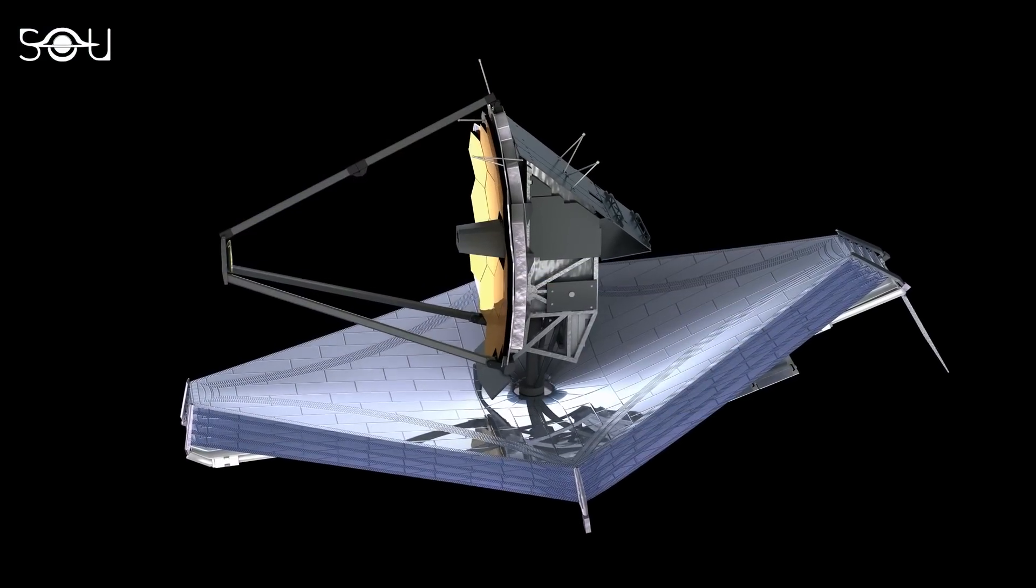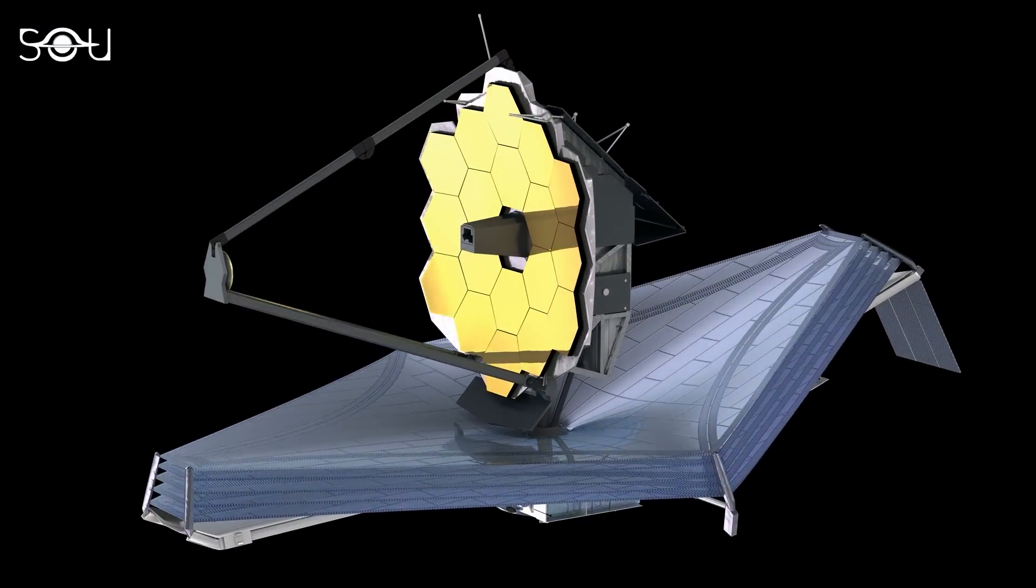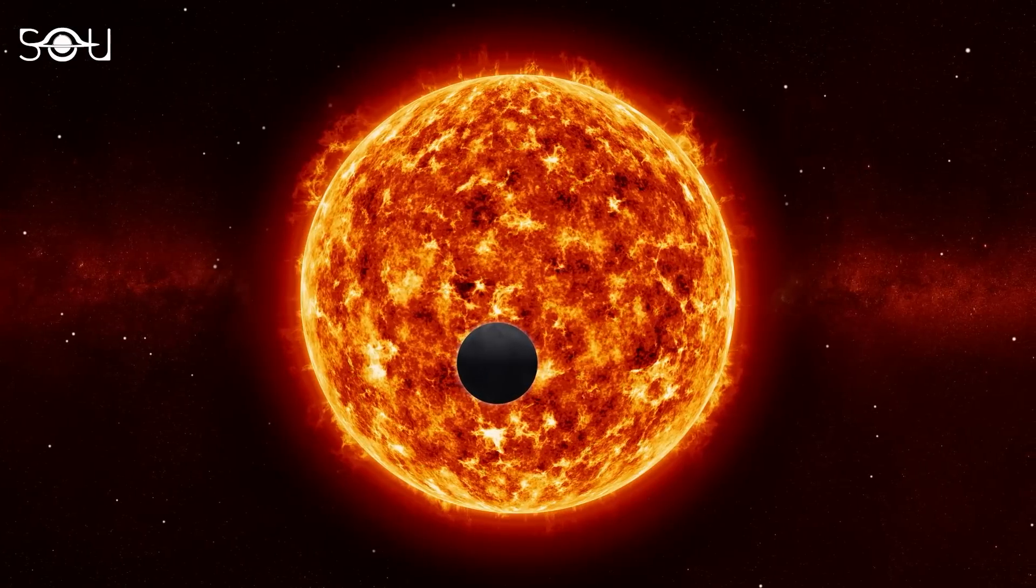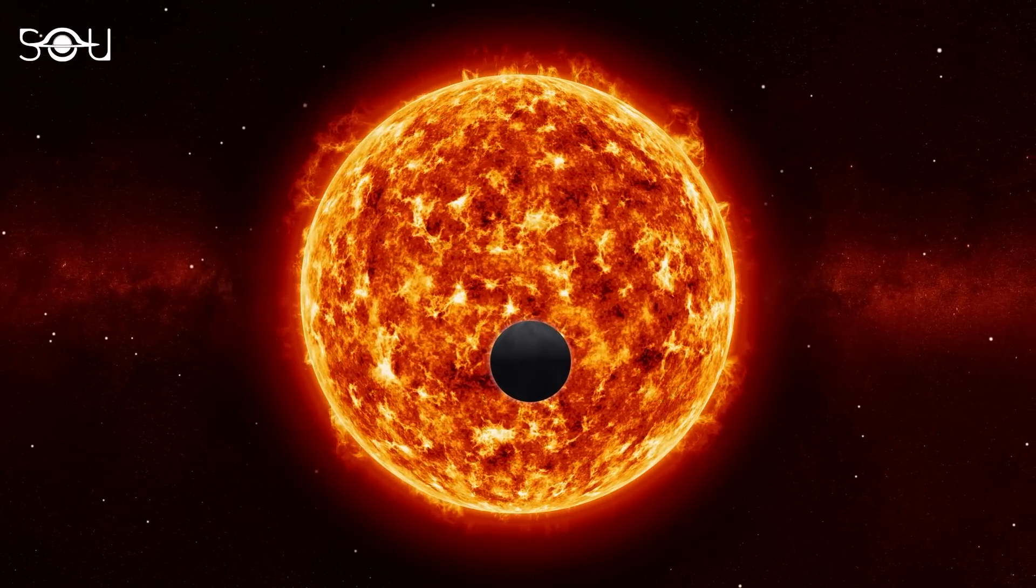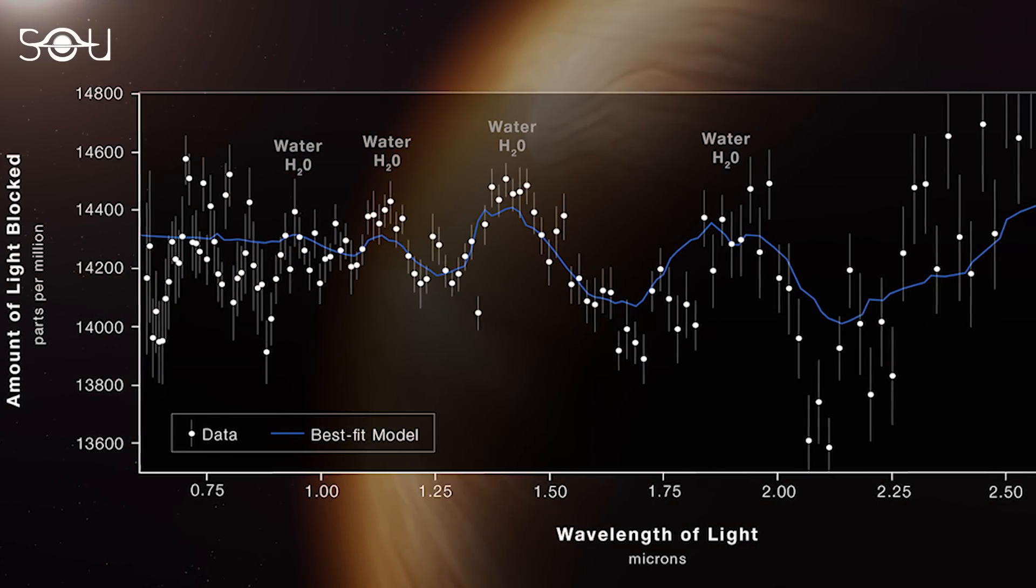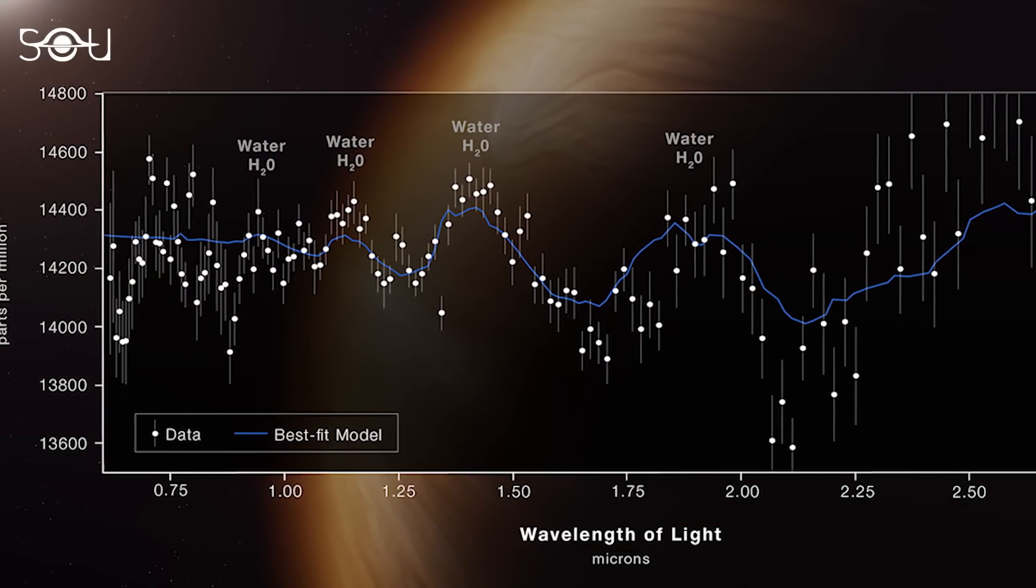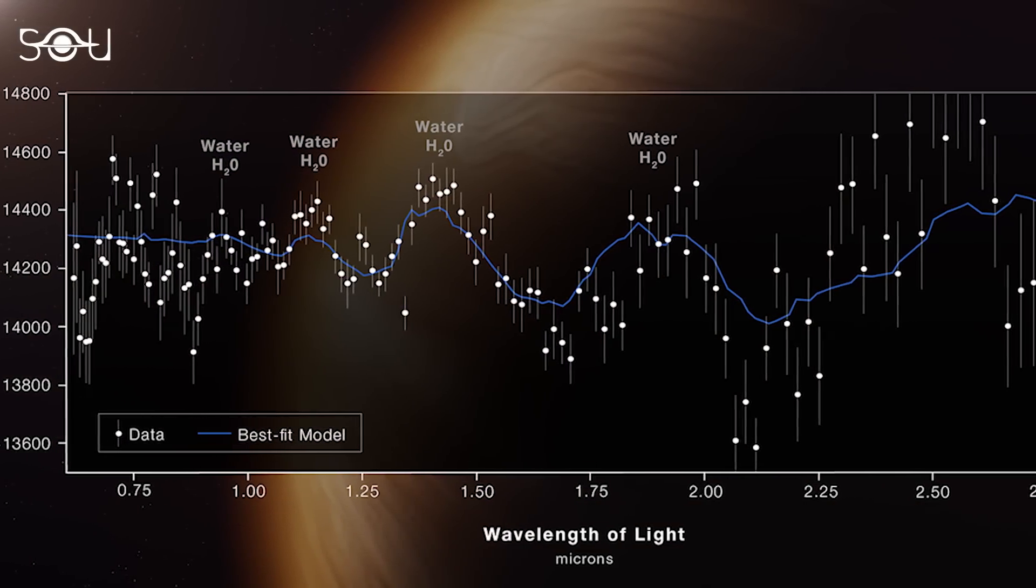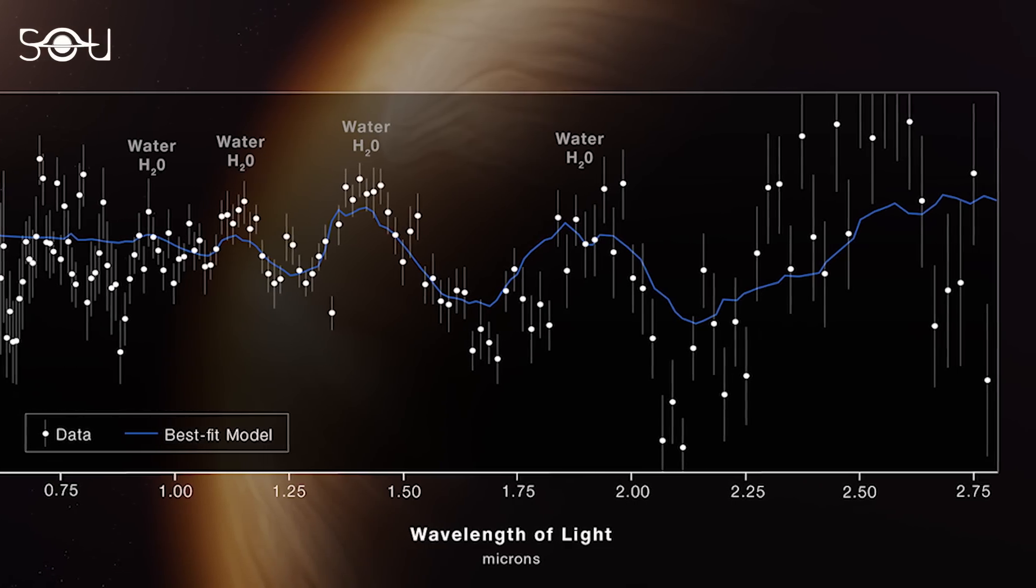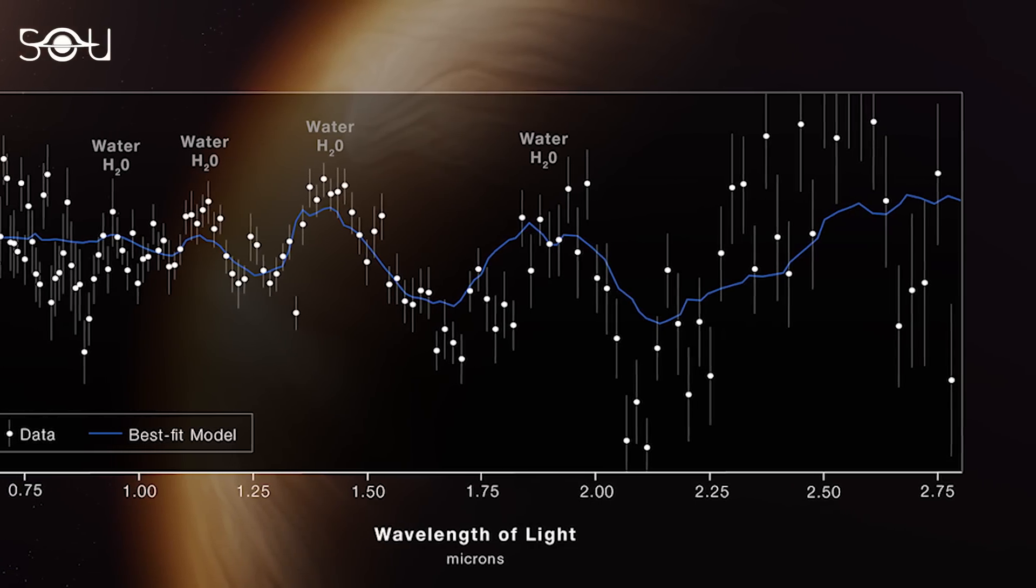On June 21, Webb's near-infrared imager and slitless spectrograph was used to observe this planet as it transited its star for 6.5 hours. In the spectrum, 141 data points appear as white circles, and each one represents the amount of a specific wavelength of starlight blocked by the planet and absorbed by its atmosphere.